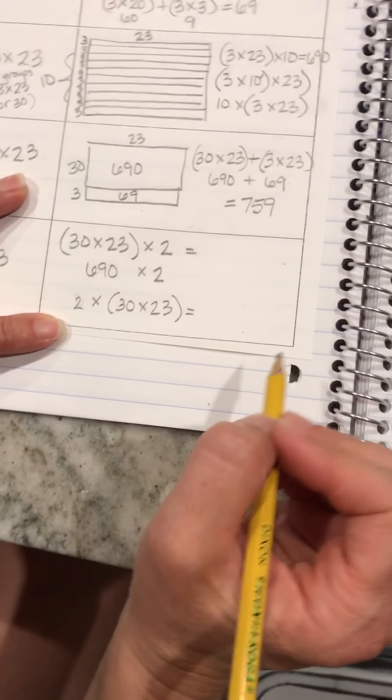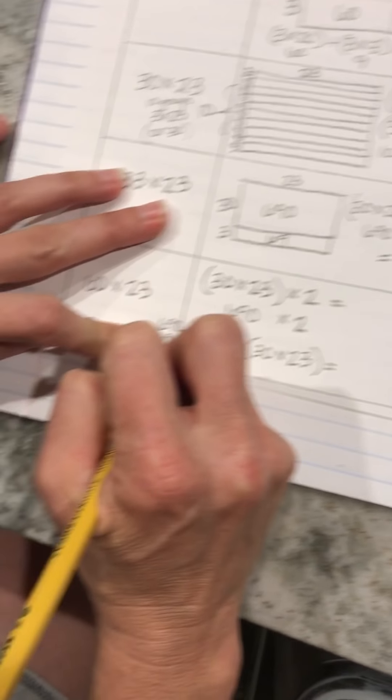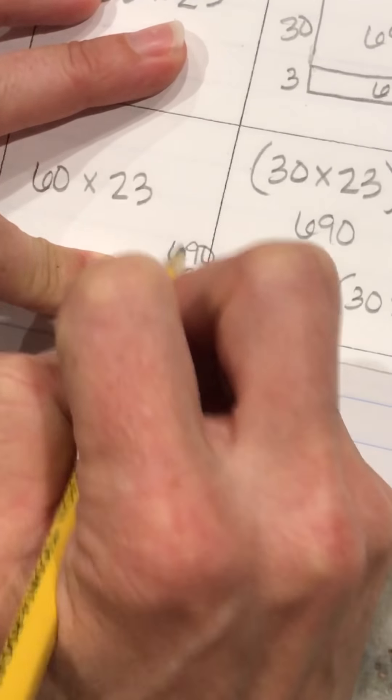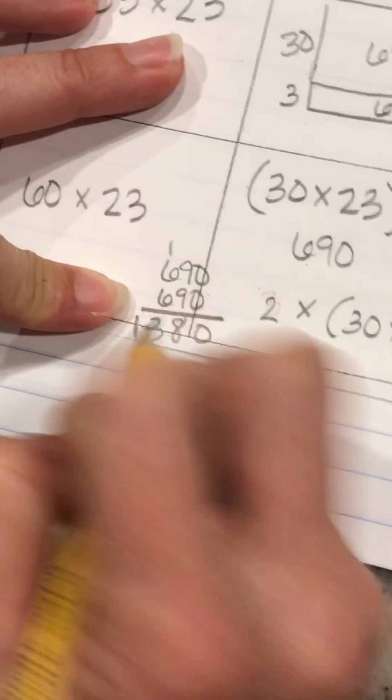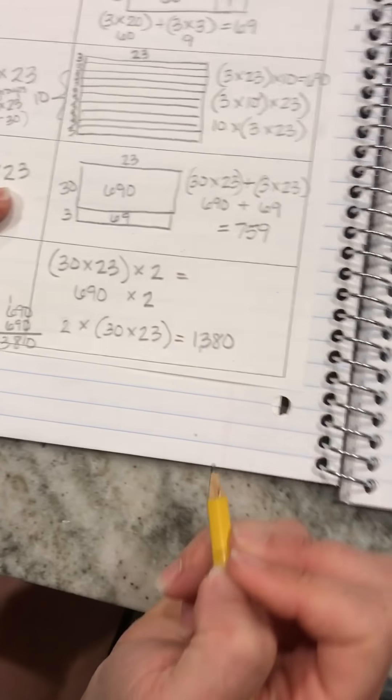So 690 plus 690, let me do this over here. You can add them together and get 1380.